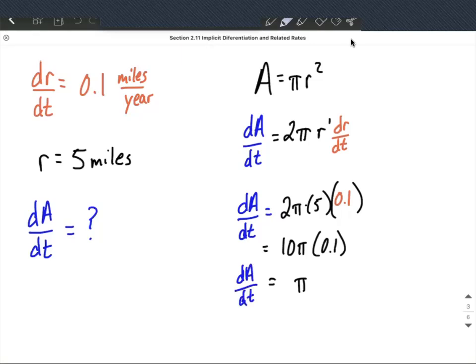Then if we're going to think about units on this, we had 5 miles and then 0.1 miles per year. So if we included those units, we would multiply the numerators together and get miles times miles or miles squared per year.